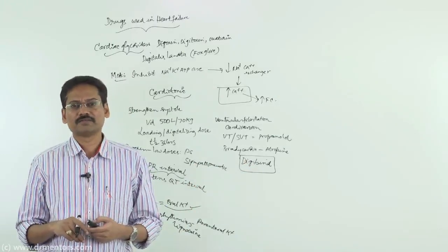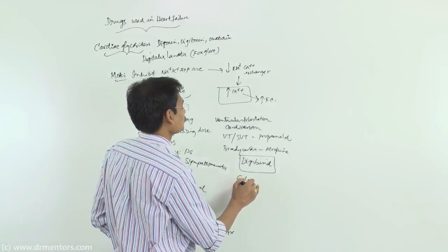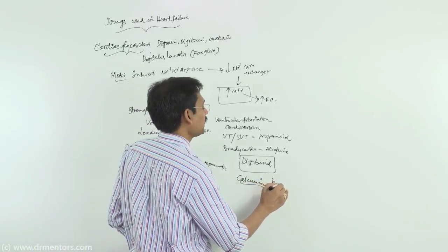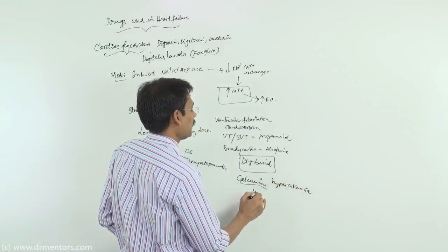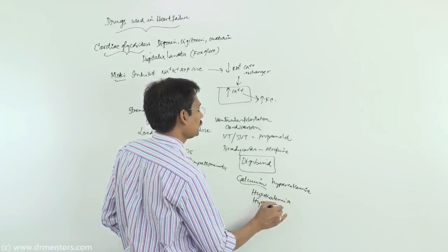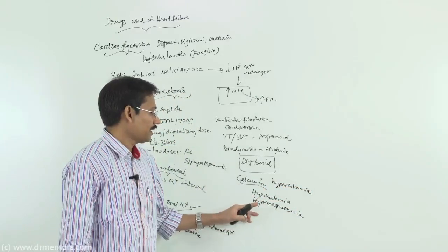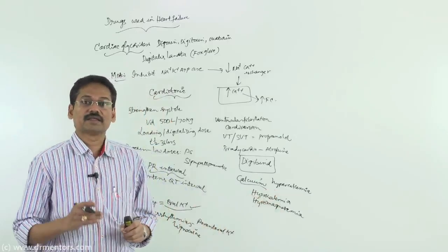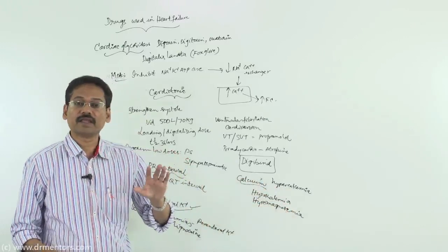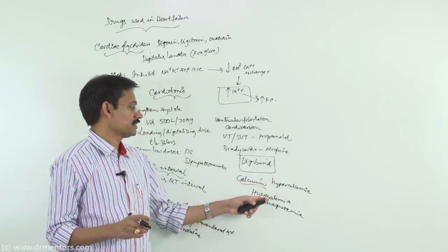There are many MCQs on interactions of digitalis with electrolytes. Hypercalcemia, hypokalemia, and hypomagnesemia are the factors that increase digoxin toxicity. In other words, increased calcium and decreased potassium or magnesium will aggravate or increase the toxicity of digoxin.